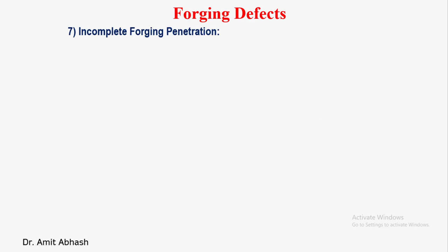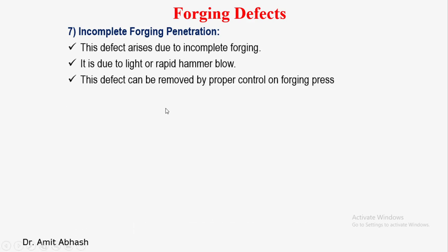Incomplete forging penetration is a defect that also occurs in welding, where two nuggets — if you are just welding — and the welded part, meaning the filler material you are putting in, does not fill that section completely, such as in a lap joint. This defect arises due to incomplete forging. It is due to light or rapid hammer blows. This defect can be removed by proper control on forging press.